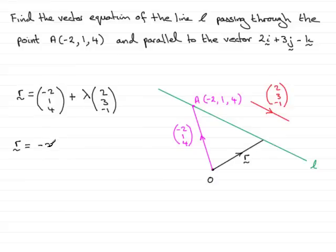So you would see (-2 + 2λ) for the i component, and then (1 + 3λ) for the j component, and finally for the k component (4 - λ). And that would be represented in a column.